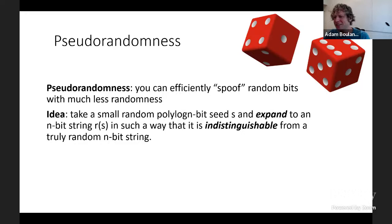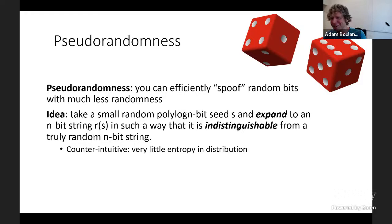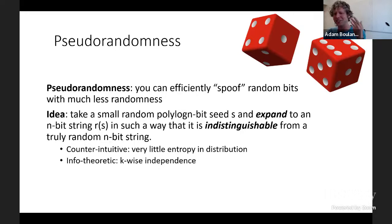The way this is usually solved in classical computing is via pseudo-randomness, where the basic idea is that you can efficiently spoof random bits with much less randomness than you might naively think is required. More formally, you take a very small random seed S of poly-logarithmic length and expand it to an N-bit string R(S), such that the induced distribution on N-bit strings is indistinguishable from a truly random N-bit string.